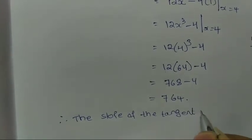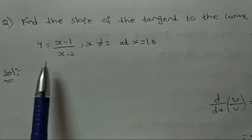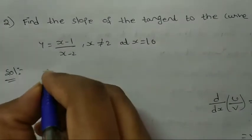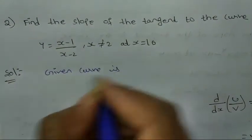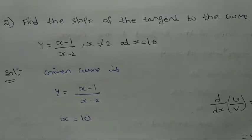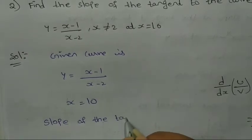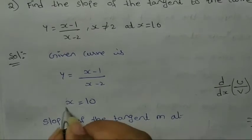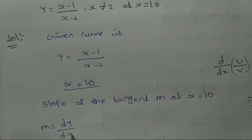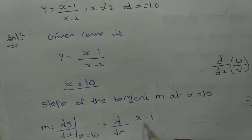Therefore the slope of the tangent is 764. Second question: Find the slope of the tangent to the curve y = (x−1)/(x−2) at x = 10. Given curve is y = (x−1)/(x−2) at x = 10. Slope of tangent m = dy/dx at x = 10.